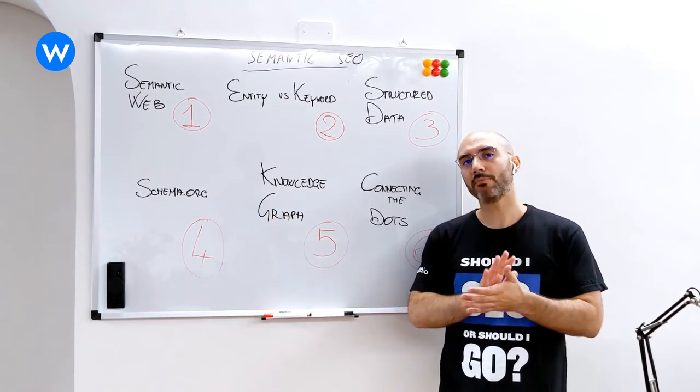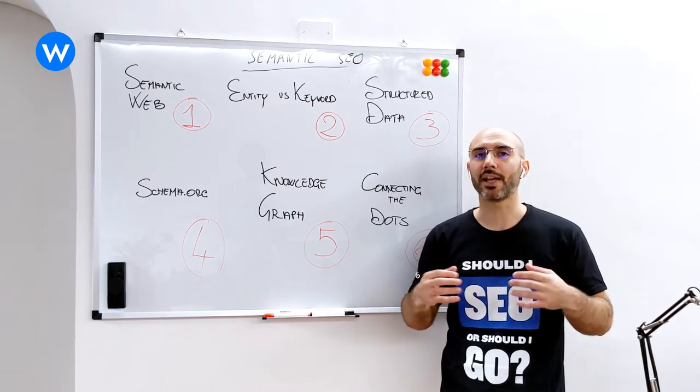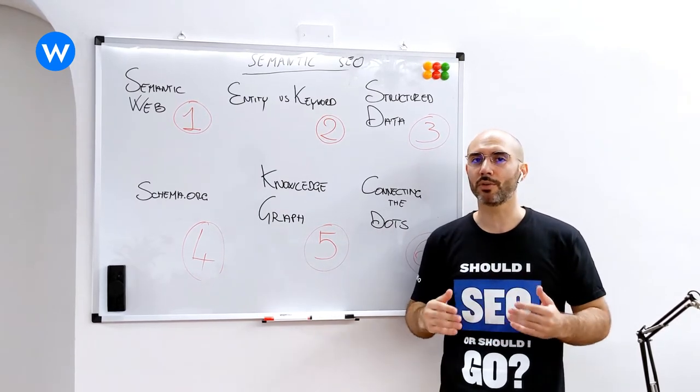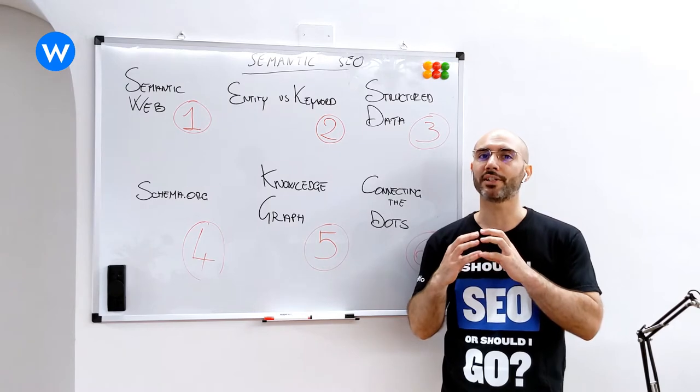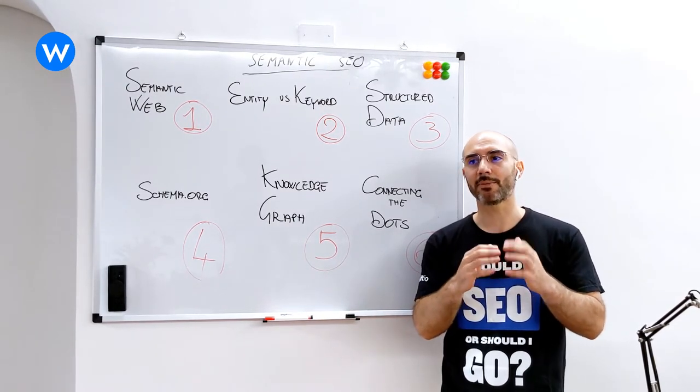Now, when we build up a relationship, so when we make a simple statement like Gennaro works at Warlift, this simple statement is actually called a triple. A triple is the basic element of the semantic web. It's really the basic element that makes it up.